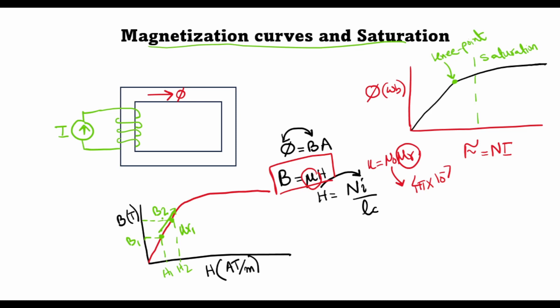However, if I were to take two points here, let's call them H3 and H4, then the increase in the magnetic flux density between B4 and B3 is negligible because the slope muR2 is significantly decreased.